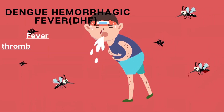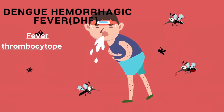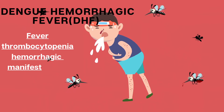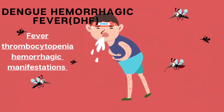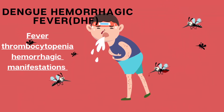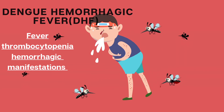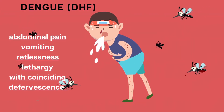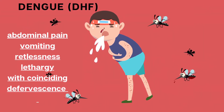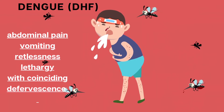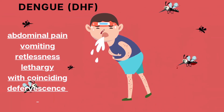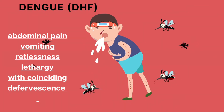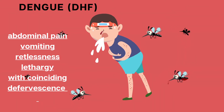Dengue hemorrhagic fever is also characterized by fever, thrombocytopenia, and hemorrhagic manifestations. The presence of intense abdominal pain, persisting vomiting, and marked restlessness or lethargy, especially coinciding with defervescence, should alert the clinician to possible impending dengue shock syndrome.